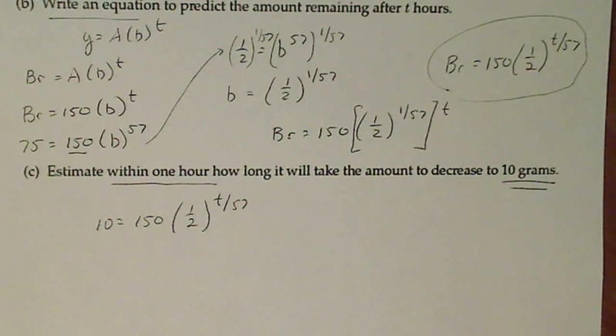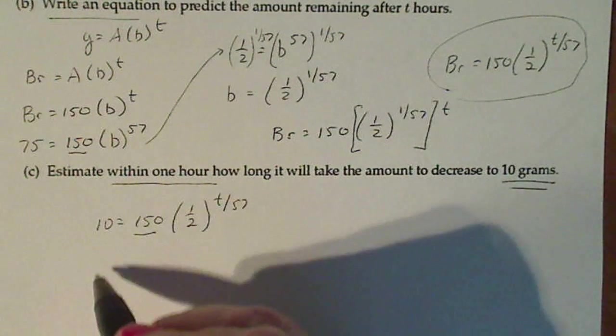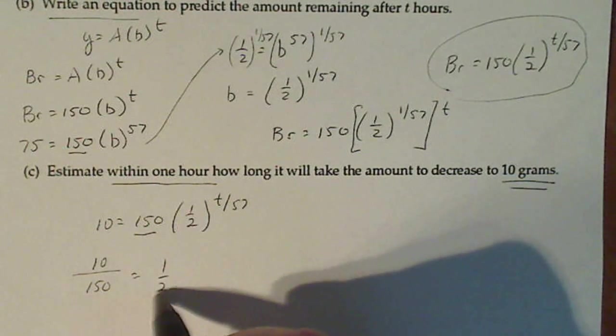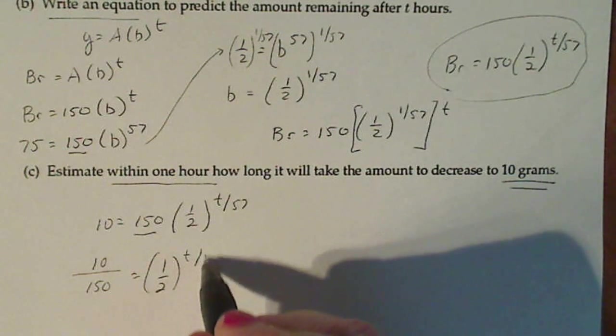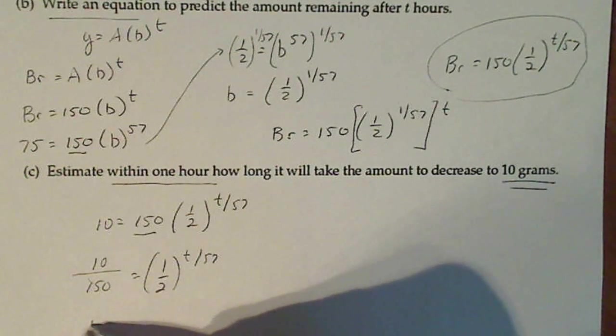t is in the power. The only way I can get that t out of the power is using logarithms. As per what I always do, I'm going to divide both sides by 150. So 10 divided by 150 is equal to one-half raised to the t over 57. Now this simplifies very nicely to one over 15.